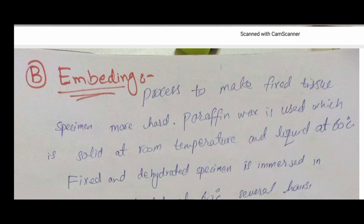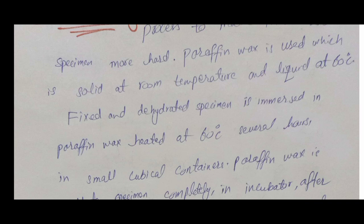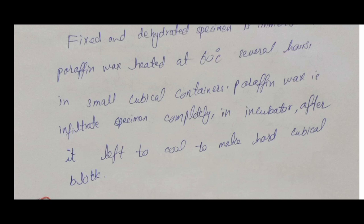The second step is embedding. Embedding is the step in which the fixed tissues are made harder for sectioning. The embedding agent is paraffin wax, which is solid at room temperature and liquid at 60°C. For embedding, we place the specimen and the paraffin wax in small cubicle containers and heat at 60°C in an incubator so that the paraffin wax infiltrates the specimen completely. After that, we allow it to cool to form a hard cubicle block.